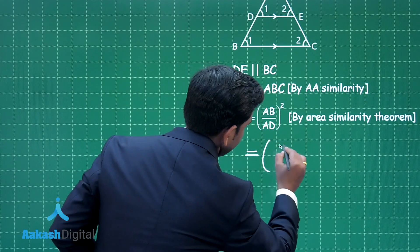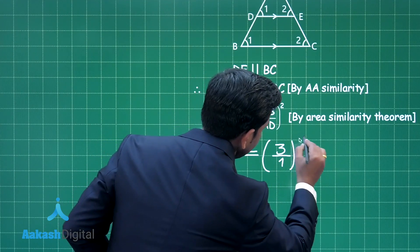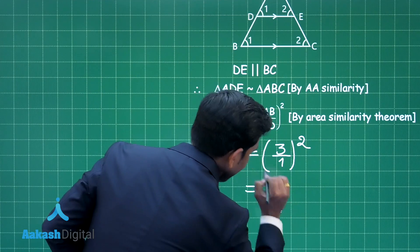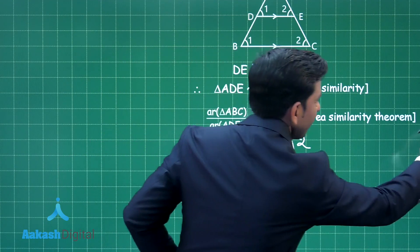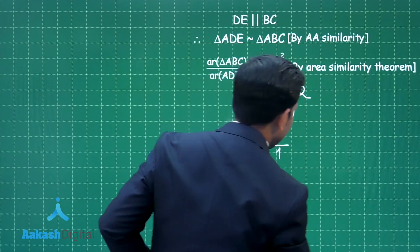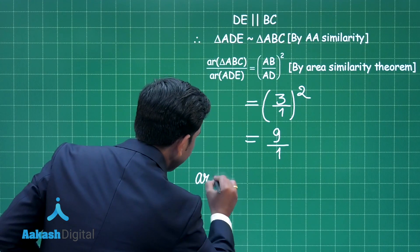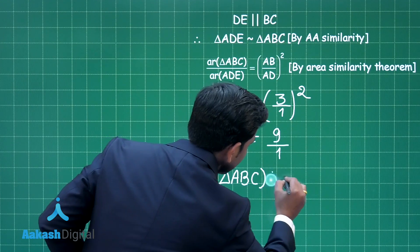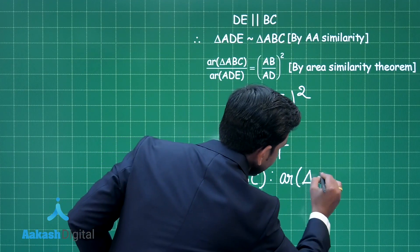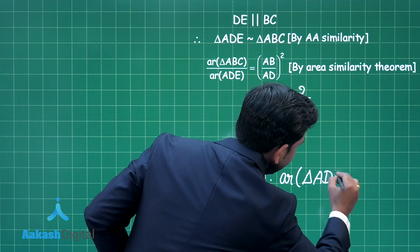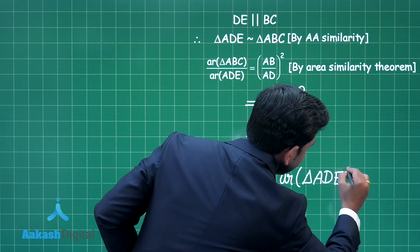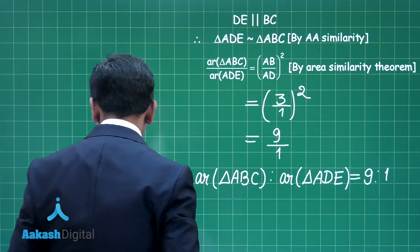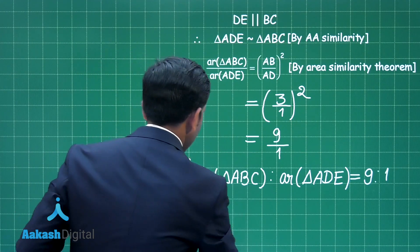So we can write (3/1)² = 9/1. Therefore the ratio of area of triangle ABC to area of triangle ADE is 9 : 1, and this is the final answer for this question.